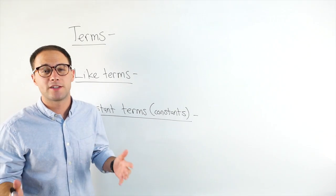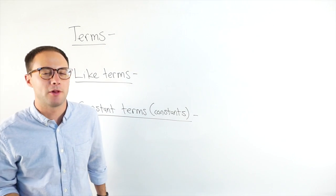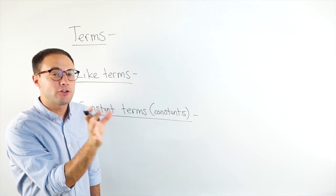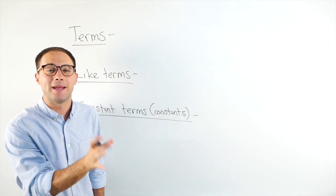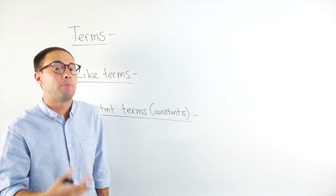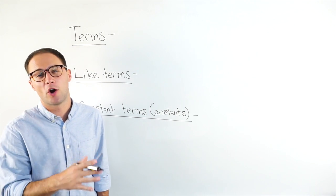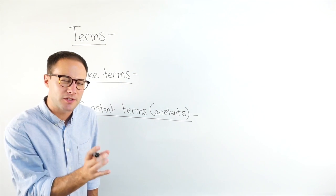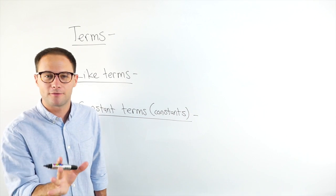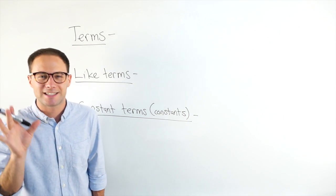Before we get to our first example, let's talk a little bit about the vocabulary involved with algebraic expressions. The algebraic part means that we're going to have variables in the expressions, and because they're expressions, there's going to be no equal sign. If it had an equal sign, then we'd be talking about equations. But for today, just algebraic expressions.